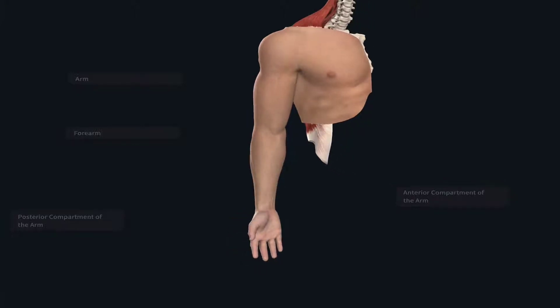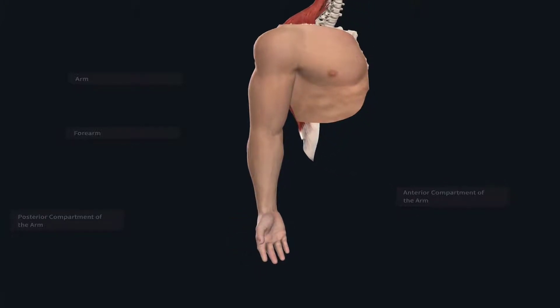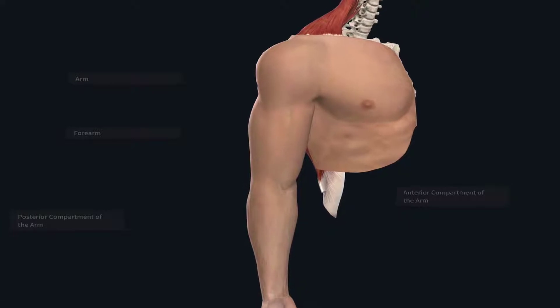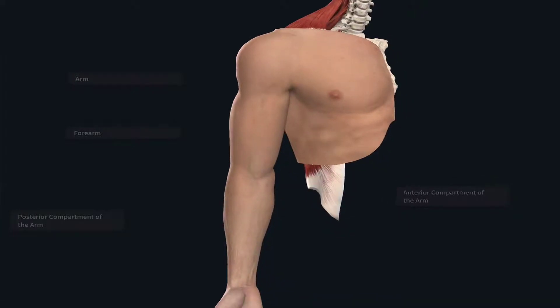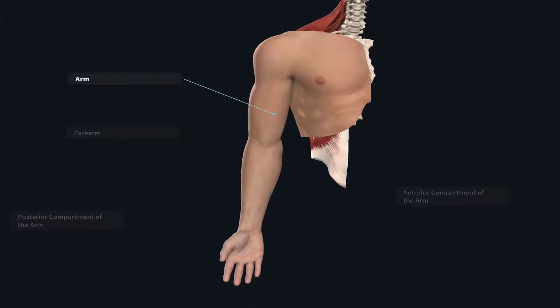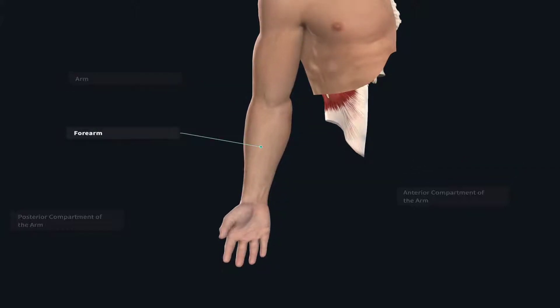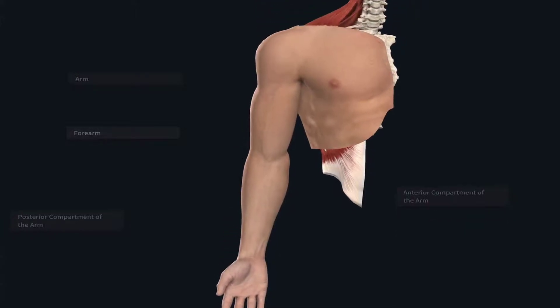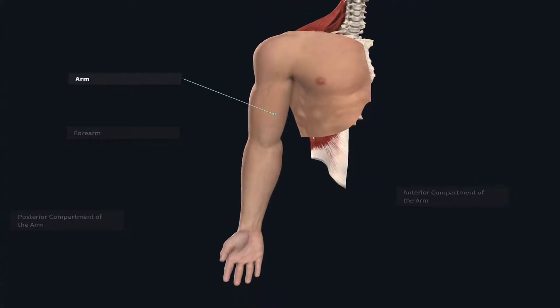Before taking a closer look at the actual muscles within the arm, I want to discuss the idea of compartments. Recall that the arm is the region of the upper limb located between the shoulder and the elbow, while the forearm is the region between the elbow and the wrist. So if I'm describing muscles of the arm, be sure that you're thinking of this region between the shoulder and the elbow.